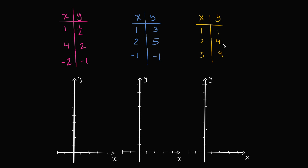I have three different relationships here between x and y. I want to think about which of these, if any, are proportional relationships. And then I want to graph them to see if we can see anything visually that makes them obviously proportional.